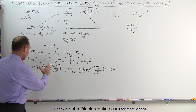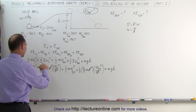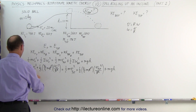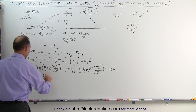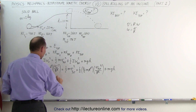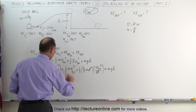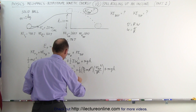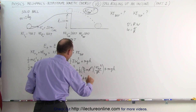Combining the terms: we have one-half mv-initial squared plus two-fifths times one-half — canceling out the twos — we end up with one-half mv-initial squared plus one-fifth mv-initial squared, equals one-half mv-top squared. Again the twos cancel out to give one-fifth mv-top squared.